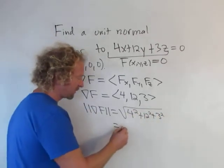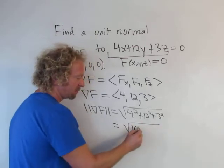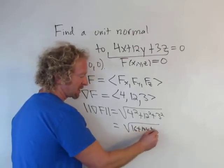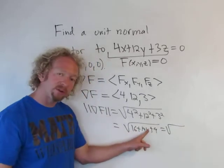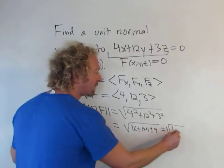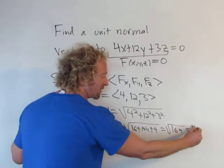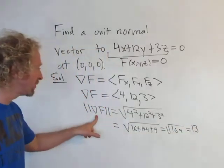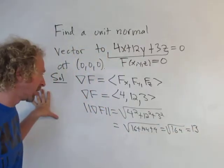So it looks like we're going to get, let's see, 16 plus 144 plus 9. That's going to be 16 plus 144 is 160, so 169. The square root of 169 is 13. So that's the magnitude of the gradient vector.